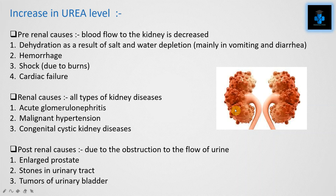Renal causes include acute glomerulonephritis, malignant hypertension, and congenital cystic kidney diseases. Post-renal causes are due to obstruction to the flow of urine. The reasons for these include enlarged prostate, stones in the urinary tract, and tumors of the urinary bladder.